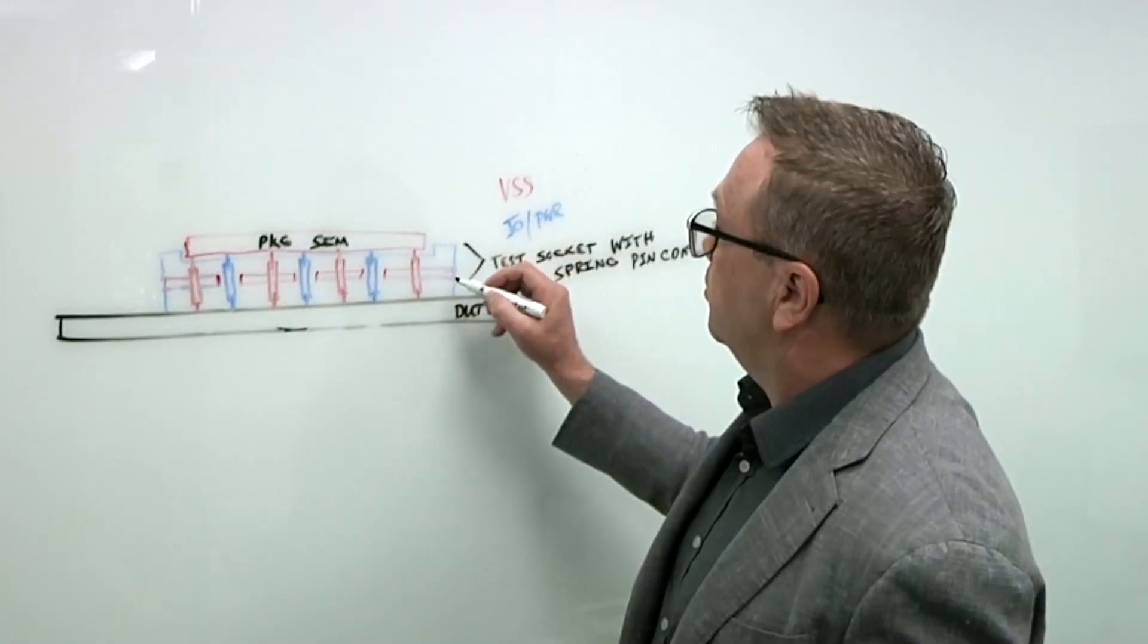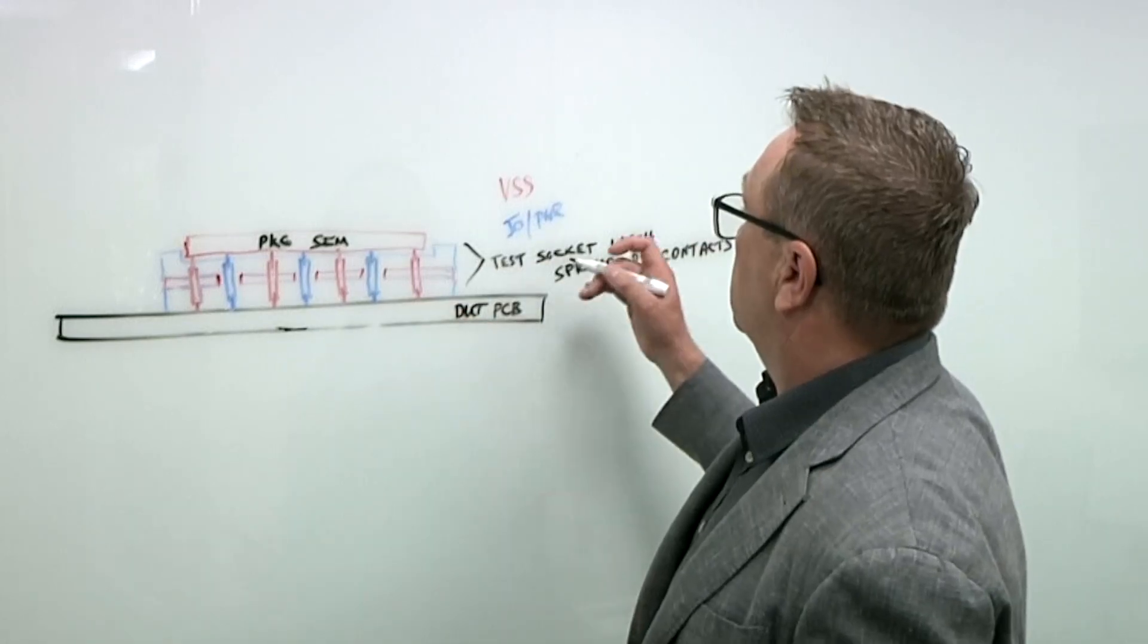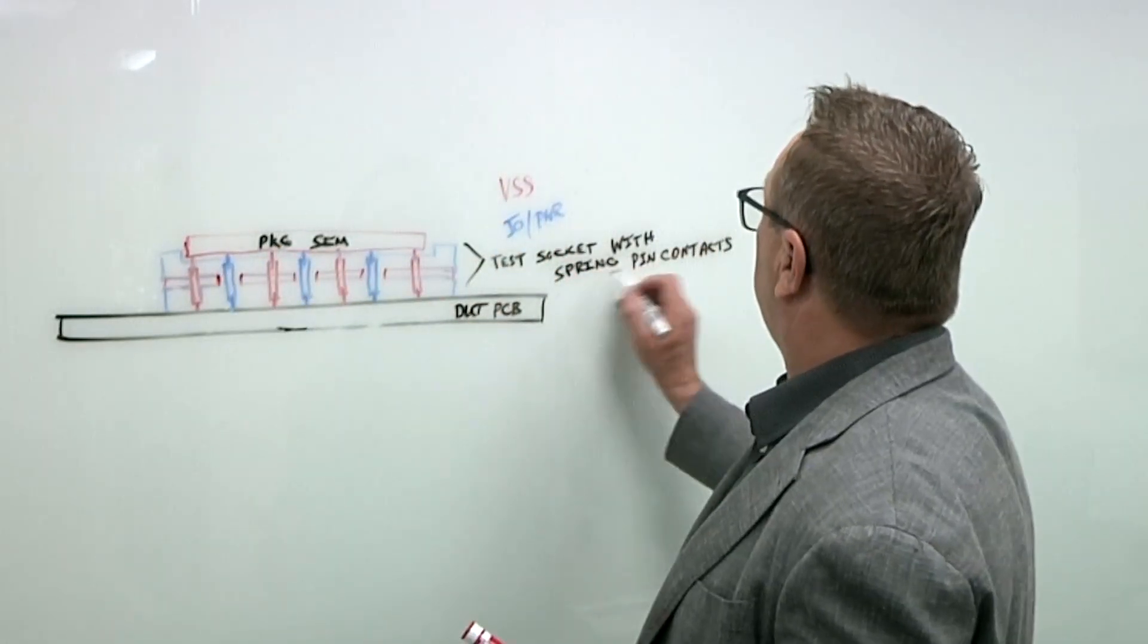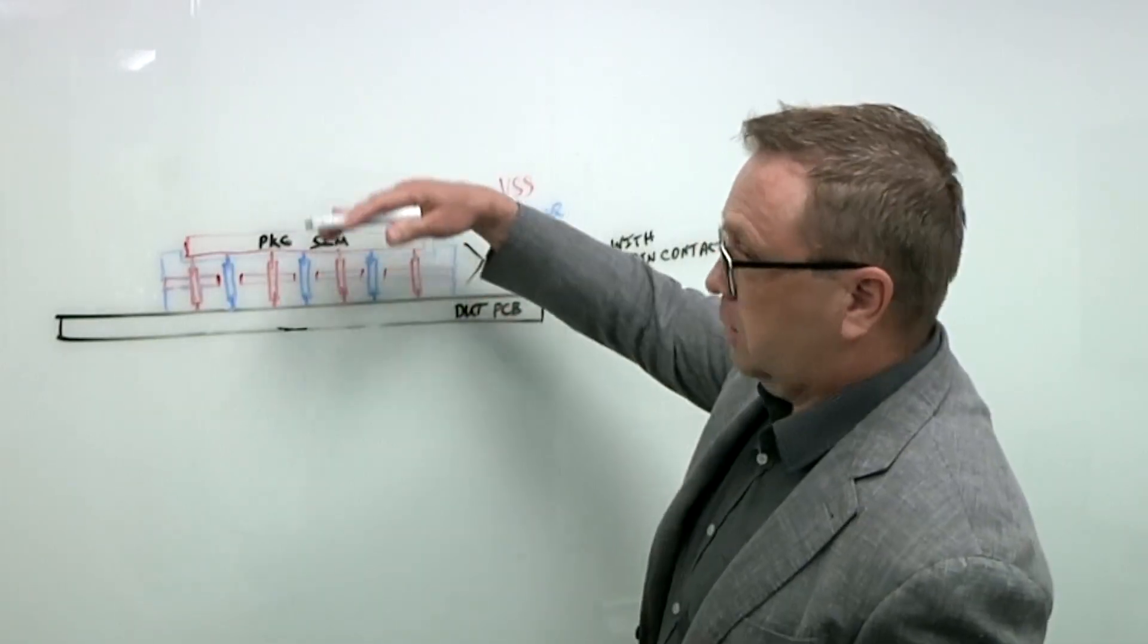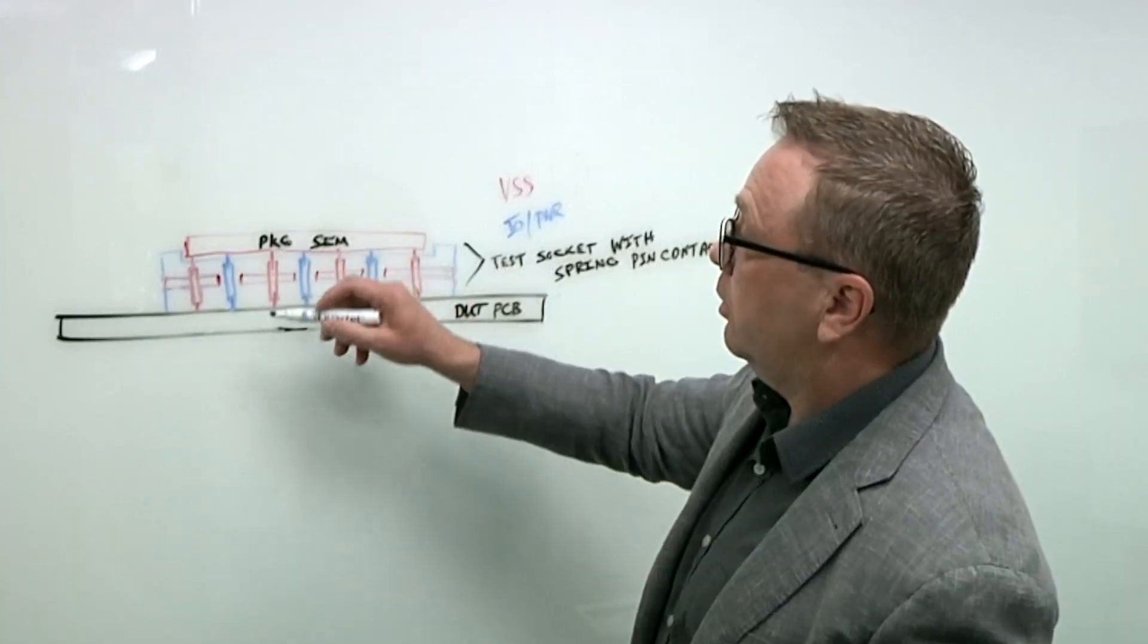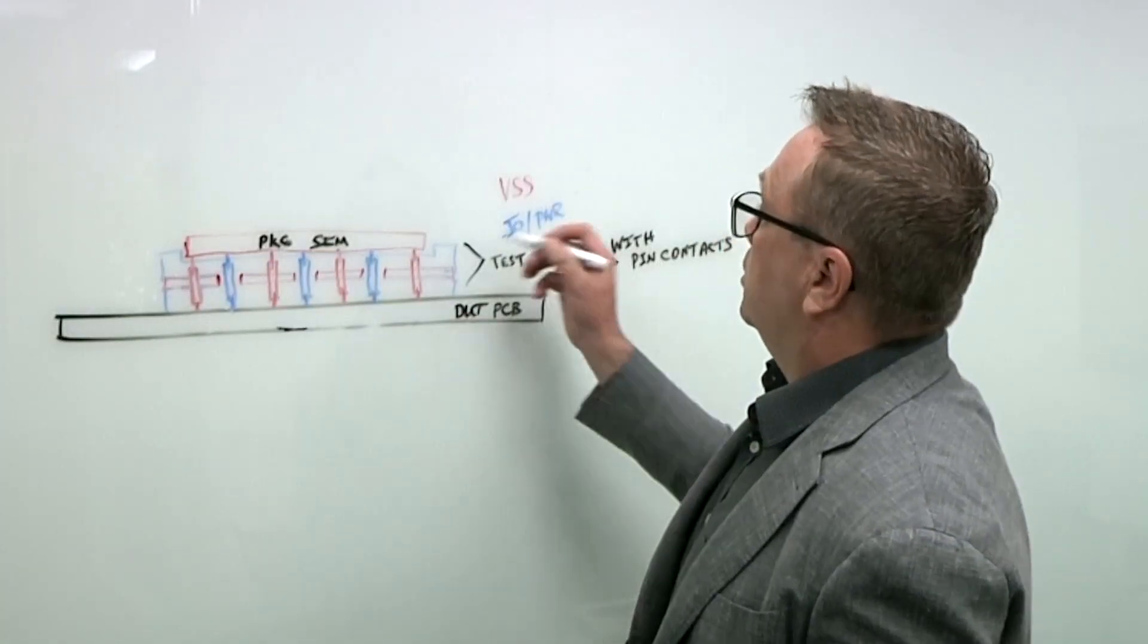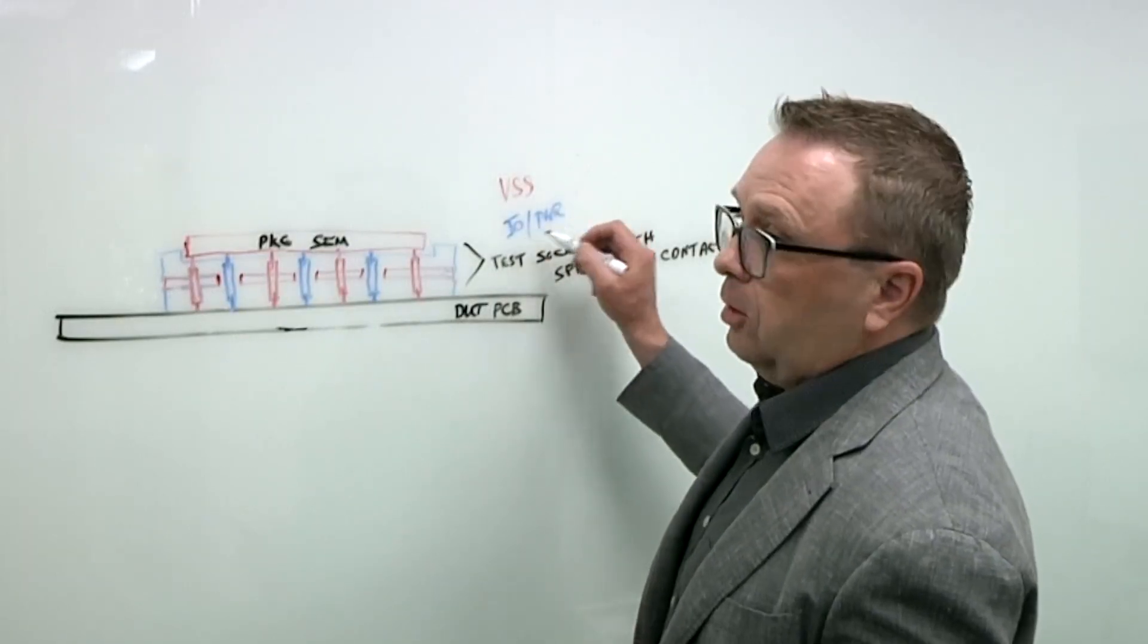So this would traditionally be a test socket housing with spring pin contacts installed to provide compliance for the package warpage and electrically interconnect the power, the grounds, and IOs from the tester to the device under test. So they're typically broken up into VSS or ground pins and IO and power pins.